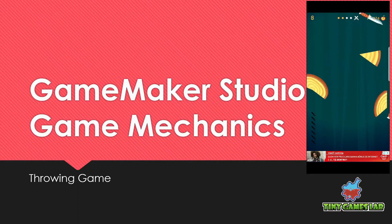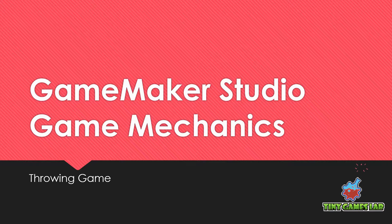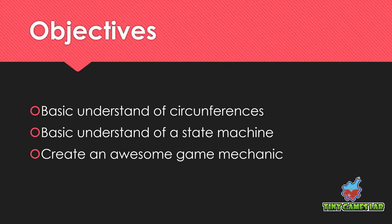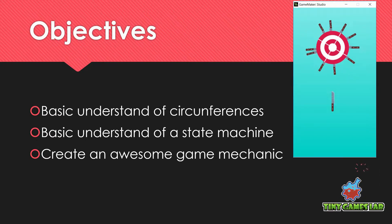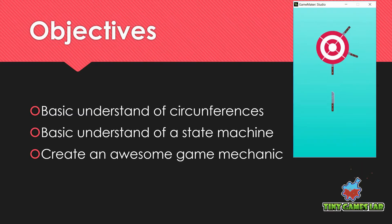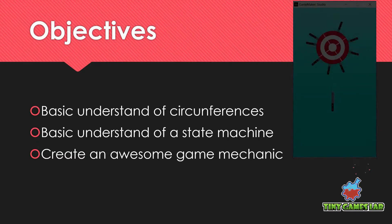So this is what we'll be making in this session. The objectives are a basic understanding of how a circumference works for positioning in the game, a basic understanding of the state machine, and creating an awesome game mechanic like this one on screen. In this game, when I press space it throws a knife to the target; I can keep adding knives until I hit another knife and the game restarts.